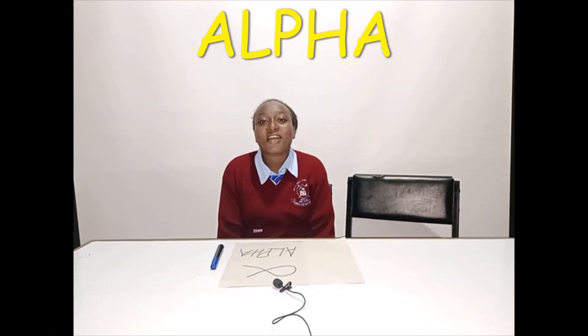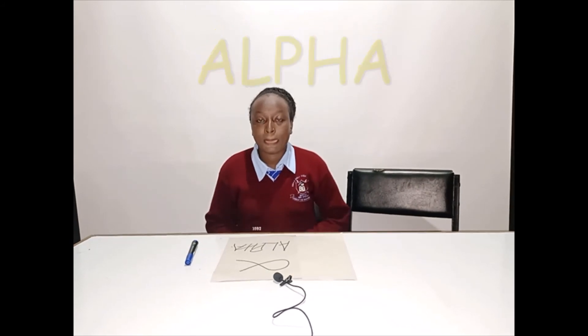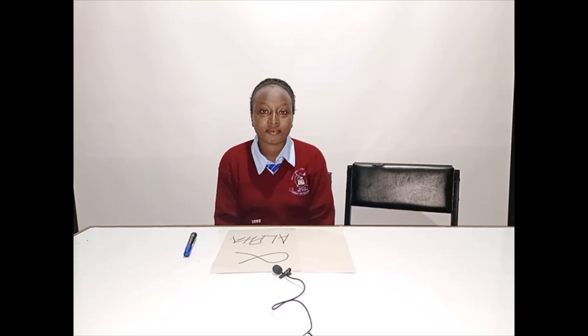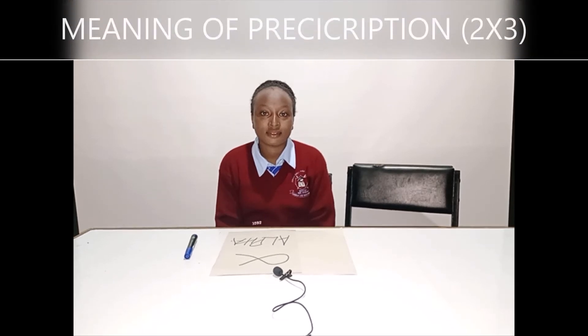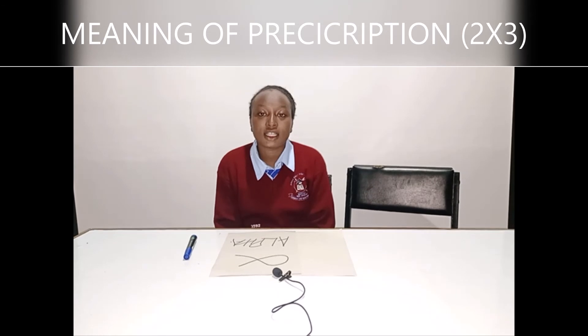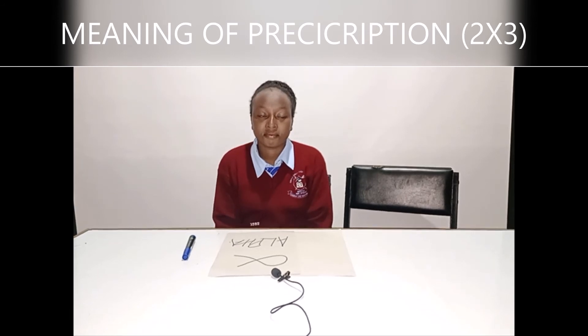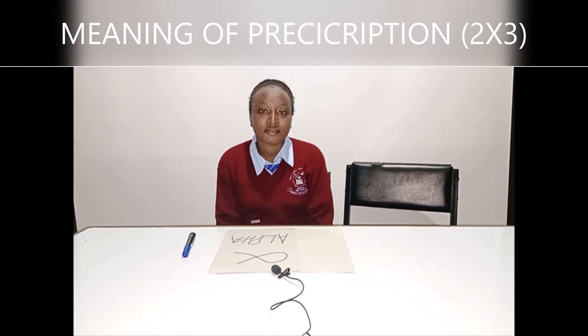Next competitor — hi guys, I am ready for the contest, and my symbol is Alpha. Form 1 work: define the term dose. A dose is a specific amount of medicine prescribed or administered by an expert in medicine, to be taken for a given period of time — good for half marks. What is the meaning of prescription 2×3 in a sachet of tablets? It means you should take two tablets three times a day — that is two tablets after every eight hours, since 24 divided by 3 equals 8 hours.